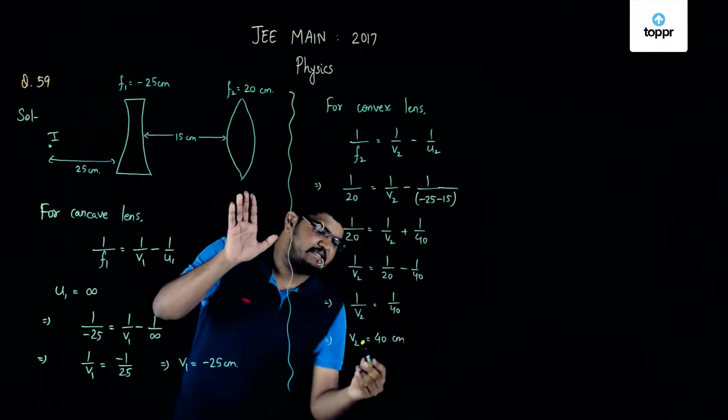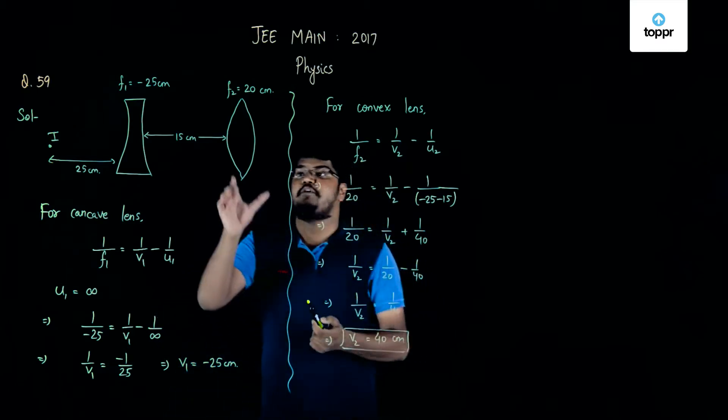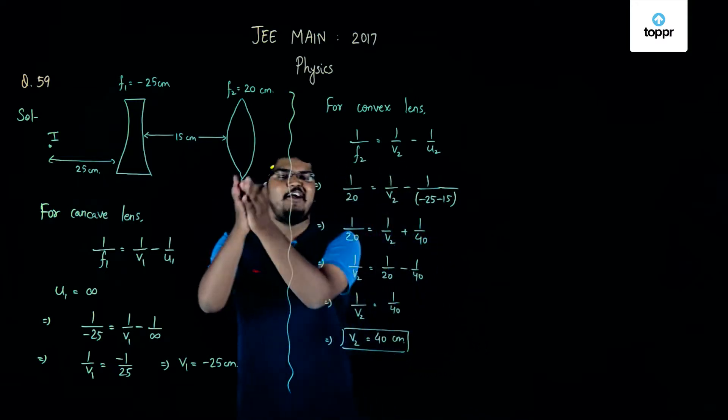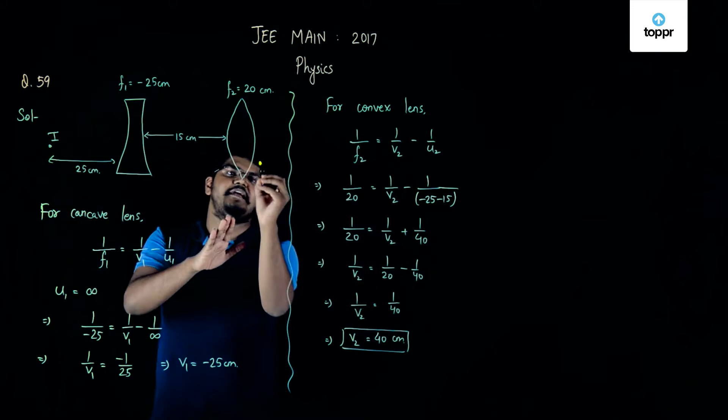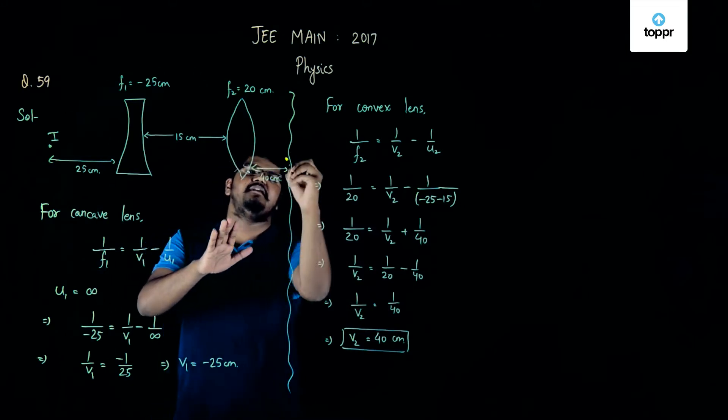And since the value of v2 is positive, we can say that this particular image will be real and it will be formed at a distance of 40 centimeter from the converging lens. So basically the image will be formed on this side and if this distance is 40 centimeter then this will be the position of our image.